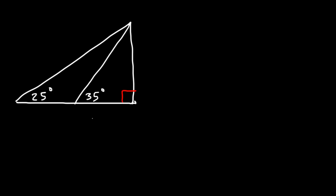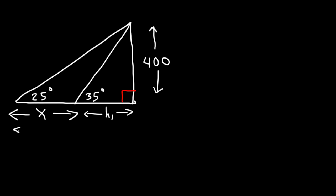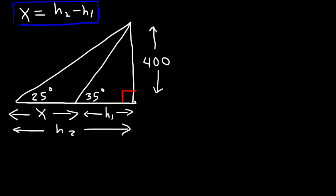Let's work on another problem. This time, the angle is 25 degrees on one side and 35 degrees on the other, and this side is 400 units long — find the value of x. We call the smaller height h1 and the total height h2, so x plus h1 equals h2. Just like before, x is the difference between h2 and h1, so we find each separately and subtract.